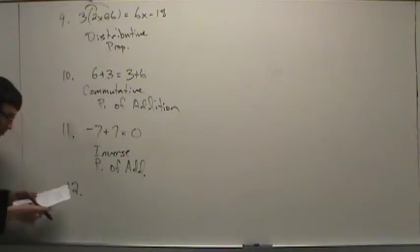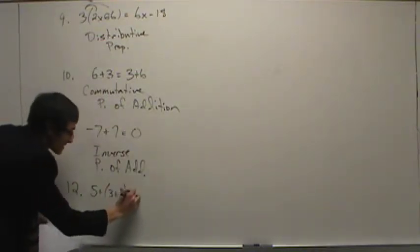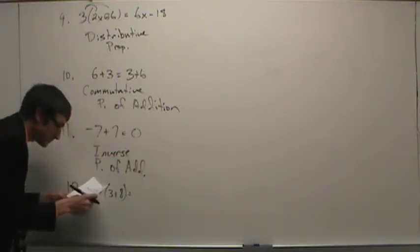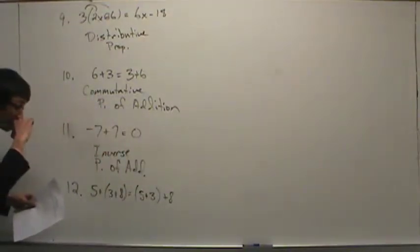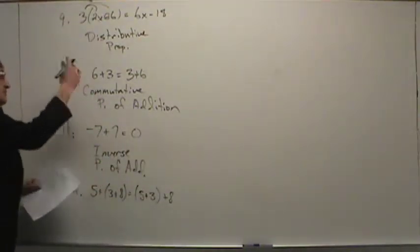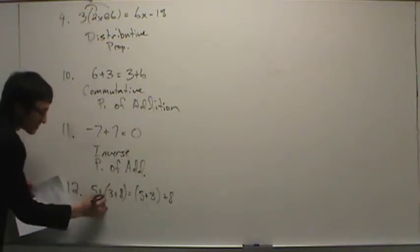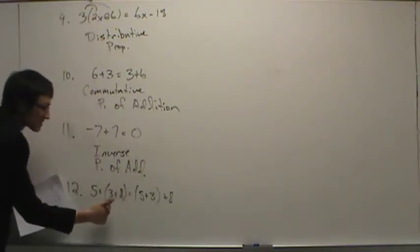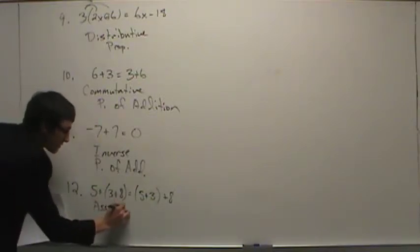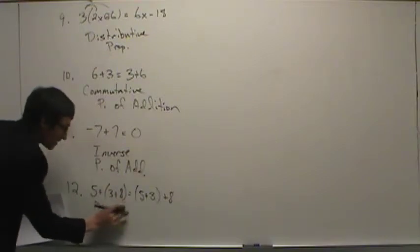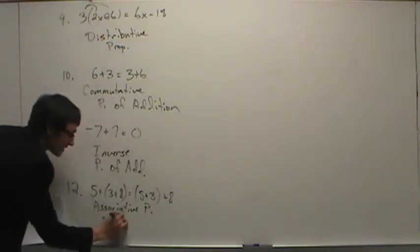Number twelve: five plus the quantity three plus eight is the same as the quantity five plus three plus eight. Parentheses give a clue to either distributive or associative. Notice it's all addition — so this is not distributive. This is the associative property of addition.